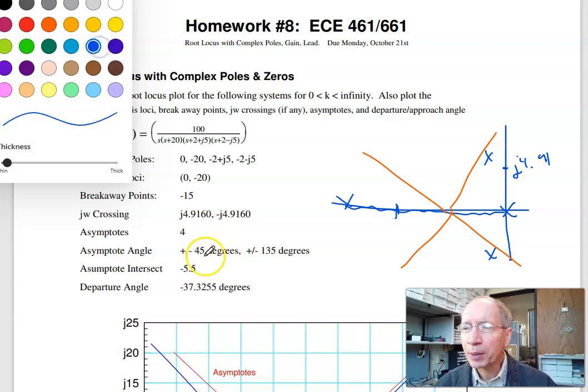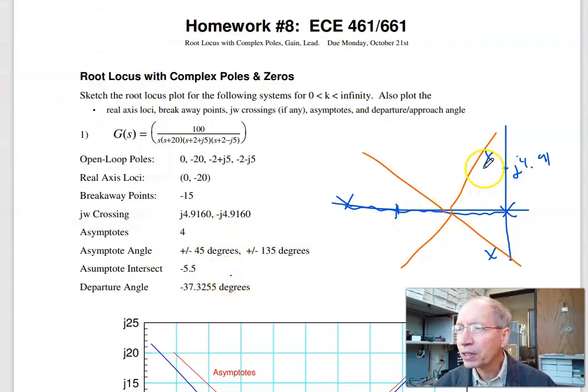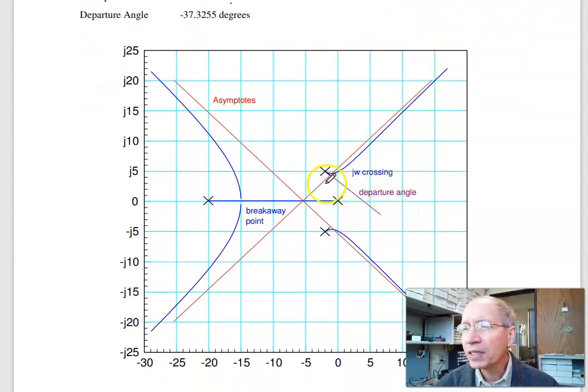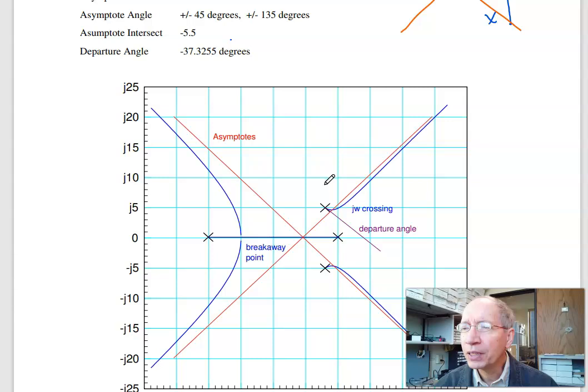The challenge is the departure angle. The departure angle is at what point do the angles add up to 180. To find it, evaluate G(s) at this point, just epsilon to the right. The angle is not 180. To make it 180, I add up all these angles and wind up 37 degrees short, so I need to add 37 degrees.